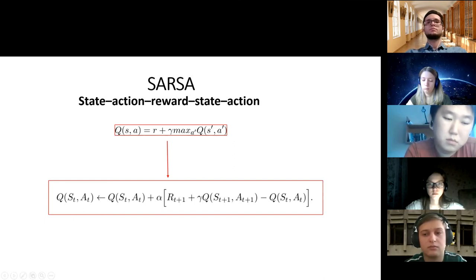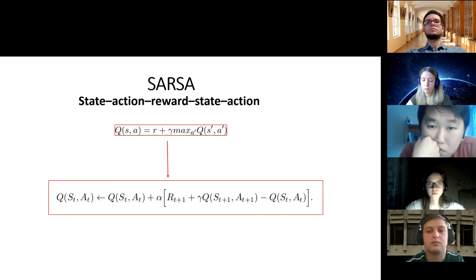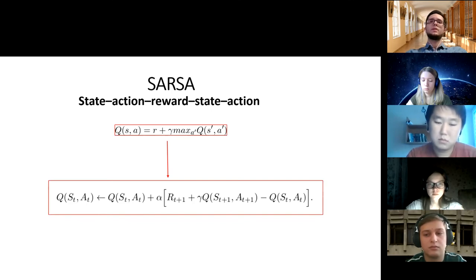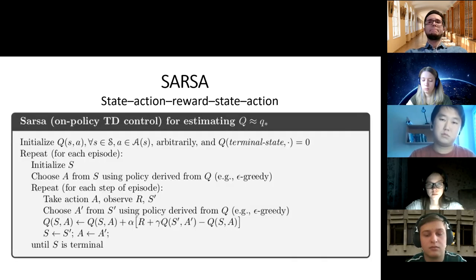Gamma is the discount factor. It determines the importance of future reward. A coefficient of zero makes an agent opportunistic by considering only current reward, while a coefficient approaching one makes it strive for long-term high reward.